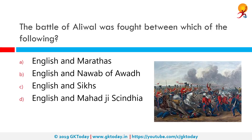The Battle of Aliwal was fought between which of the following? Correct answer is English and Sikhs. The Battle of Aliwal was fought on 28th January 1846 between British and Sikh forces in Northern India, now in Punjab.